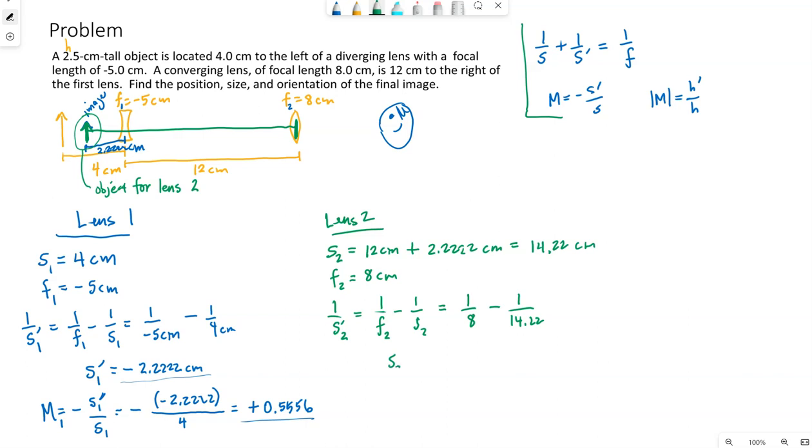So S2 prime ends up being 18.29 centimeters. I'm going to round that answer to the two sigs we're given in the problem, the two sig figs. But let me first find magnification for this second lens.